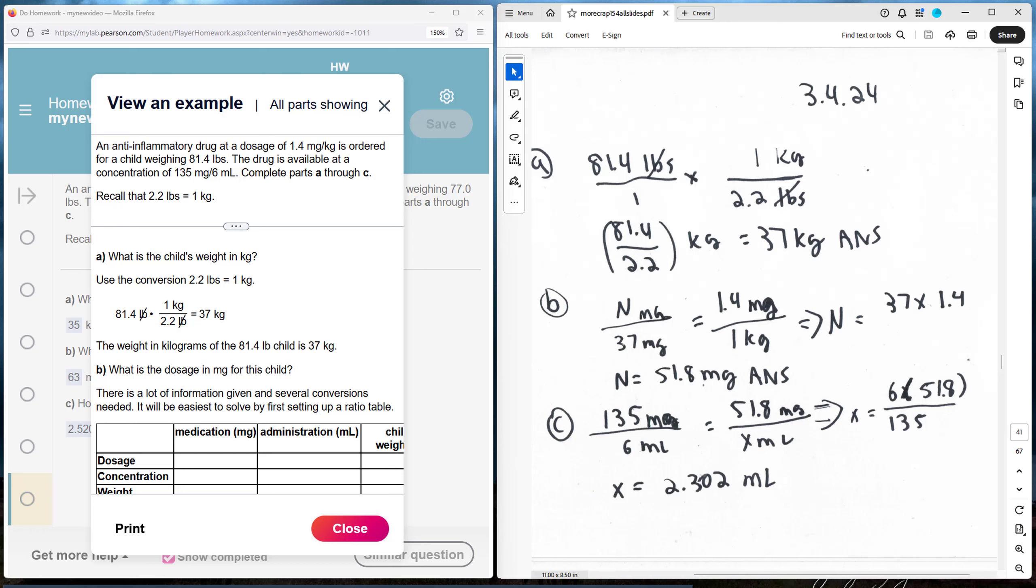So I set up a proportion here for Part B, and I cross multiply and divide. So I have 37 times 1.4, and that gives me 51.8 mg. That's how much medication the child is going to need.